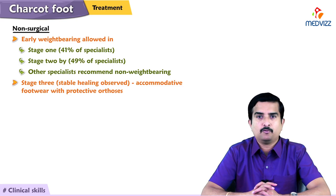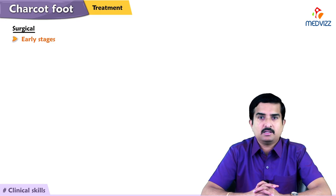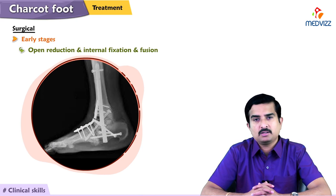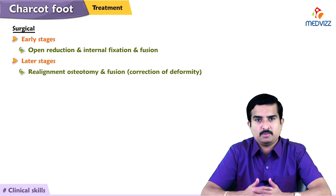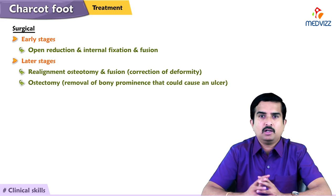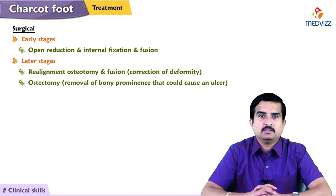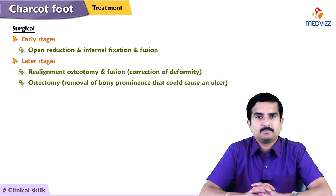For surgical treatment, select patients with instability in early stages may be treated with open reduction and internal fixation and fusion. In later stages, surgical options may include realignment osteotomy and fusion for correction of deformity, or osteectomy — removal of bony prominence that could cause an ulcer. This completes our discussion of the important condition called Charcot neuropathy.